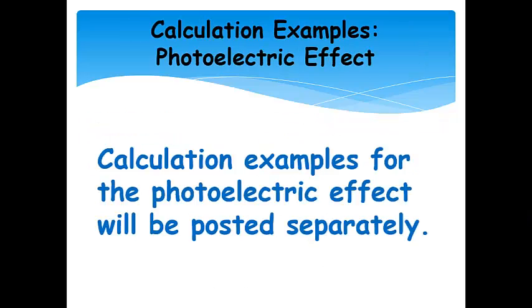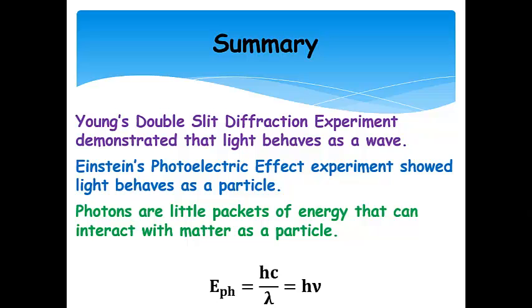Now, I'm going to post a lot of calculation examples for the photoelectric effect, and they will be posted separately. So in summary, Young's double-slit diffraction experiment demonstrated that light behaves as a wave. Einstein's photoelectric effect experiment showed that light behaves as a particle. And so we can see that light can behave either way depending on the situation.